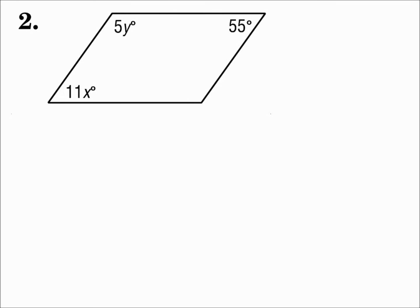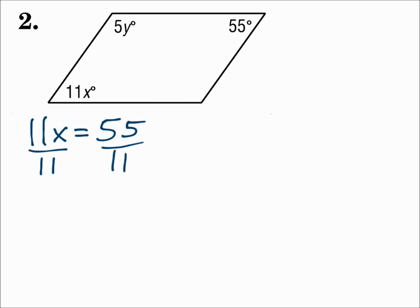For number 2, we're given angle measures. To be a parallelogram, both pairs of opposite angles need to be congruent. Starting with x: 11x and 55 are opposite angles, so those have to be equal to each other. If both pairs of opposite angles are congruent, then it's a parallelogram. Divide by 11, and x is 5.